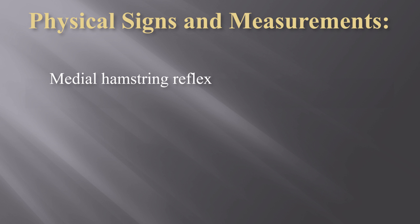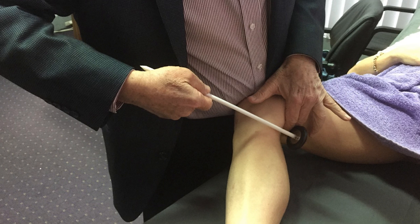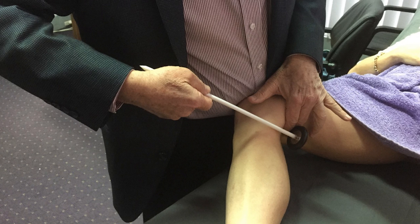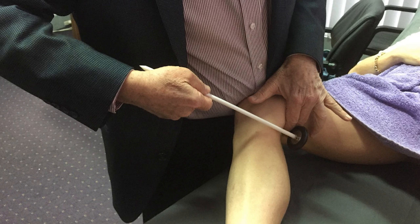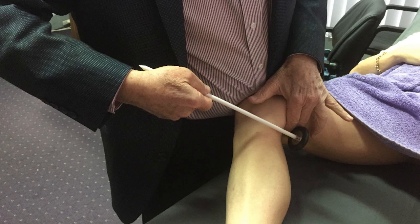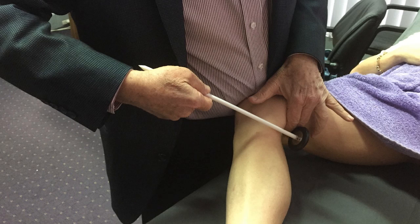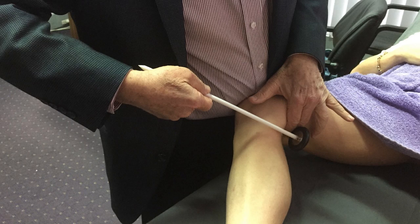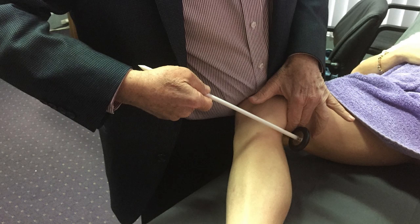Firstly then, the medial hamstring reflex. As discussed in the first session, the medial hamstring reflex is supplied by the L5 nerve root and is a very valuable sign in testing for L5 radiculopathy. I find this the best position for testing this reflex, with the knee at slightly less than a right angle and the hip flexed, abducted and externally rotated. The examiner then strikes the fingers which are resting on the medial hamstring tendons, as in testing the biceps reflex.